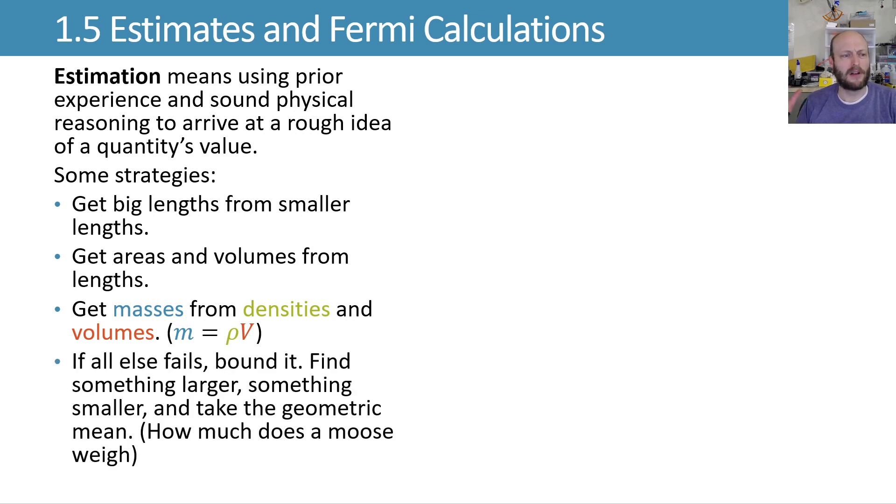And if you don't have other strategies, you can try bounding it. So finding something larger than it, something smaller than it, taking geometric mean in this case, but however you want to do that. For example, how much does a moose weigh? Well, I don't really know, but more than a human? Yeah, probably. Maybe less than a car, probably. So you can kind of bound it there and get a ballpark figure from that.